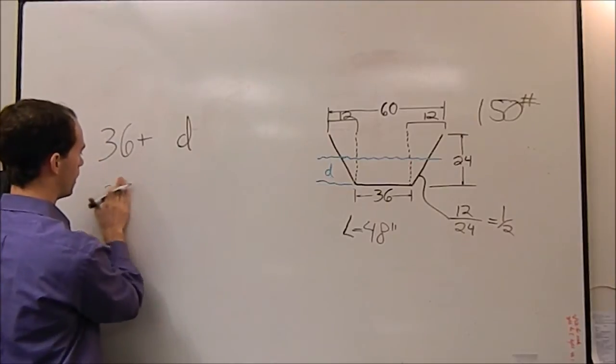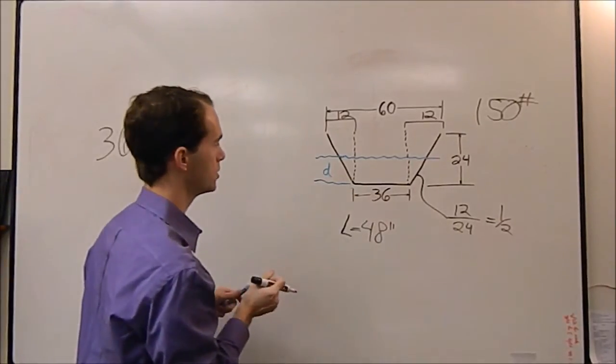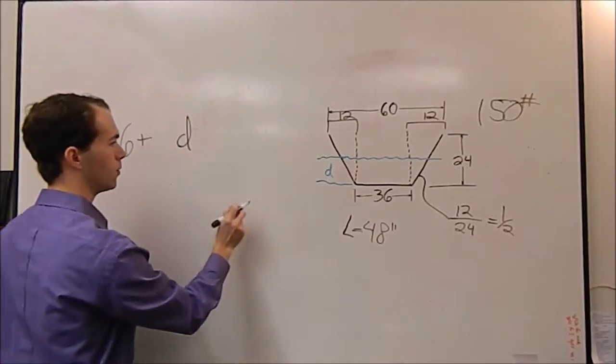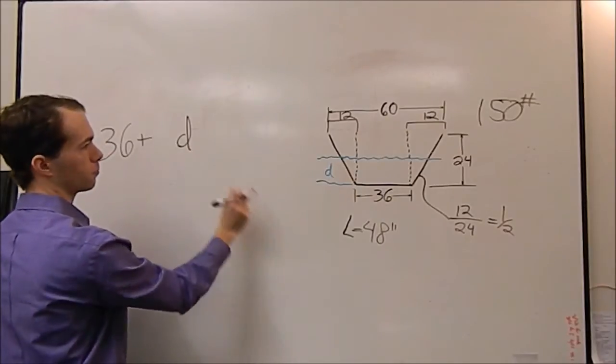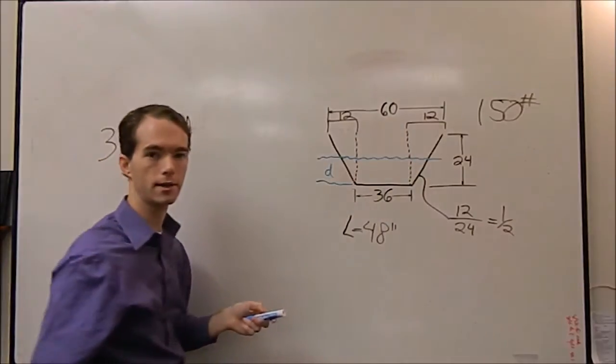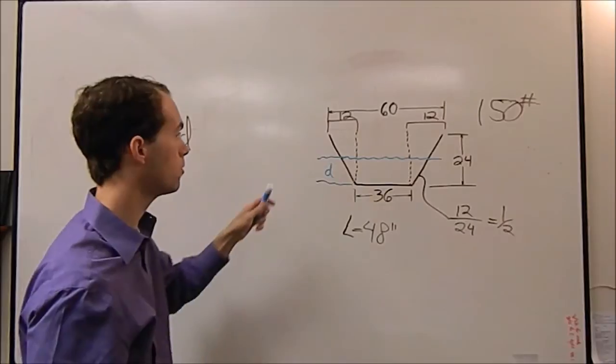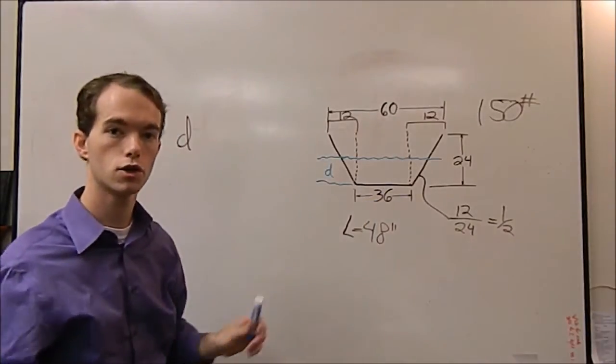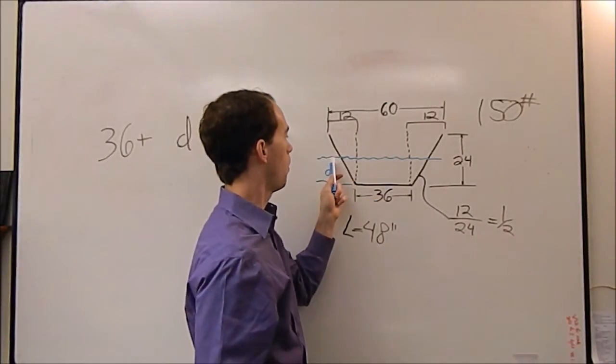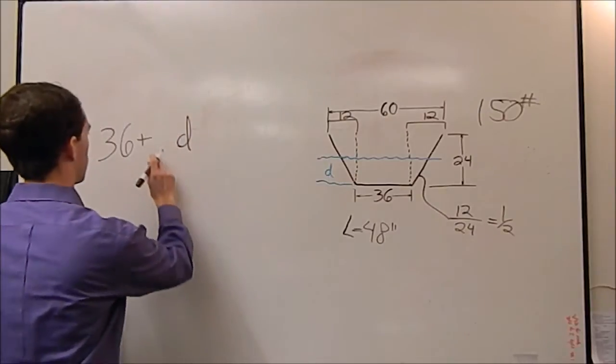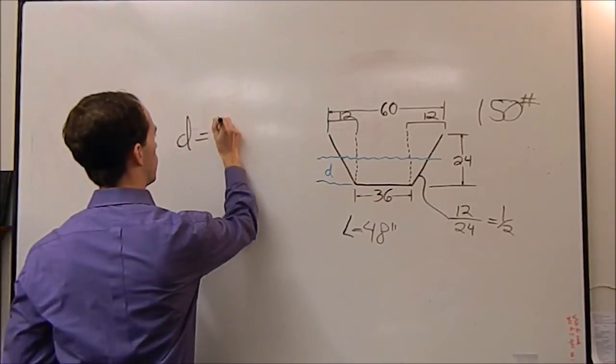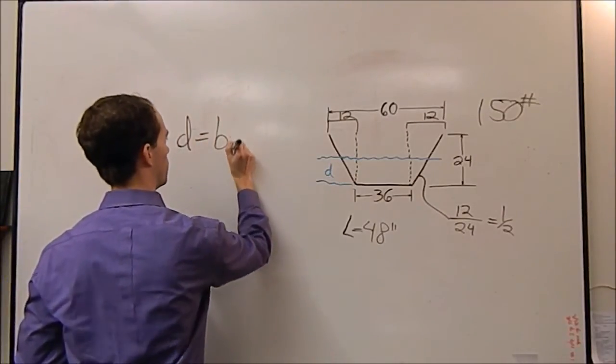So 36 plus D is our width. And now we should definitely check that as well. 36 plus D, if we let D equal 24, 36 plus 24 gets us back to 60. If D is zero, it's 36.